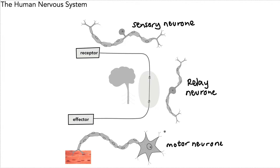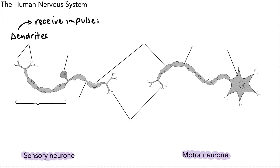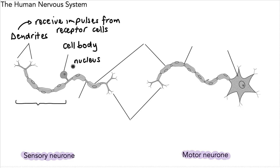We're going to look at the labels on a sensory neuron and a motor neuron. That little red thing on the left is a muscle. Right at the end of the sensory neuron we have structures called dendrites, which receive impulses from receptor cells. This structure poking out is called the cell body, which is where you would find the nucleus. Between the dendrites and the cell body in a sensory neuron we have something called a dendron.